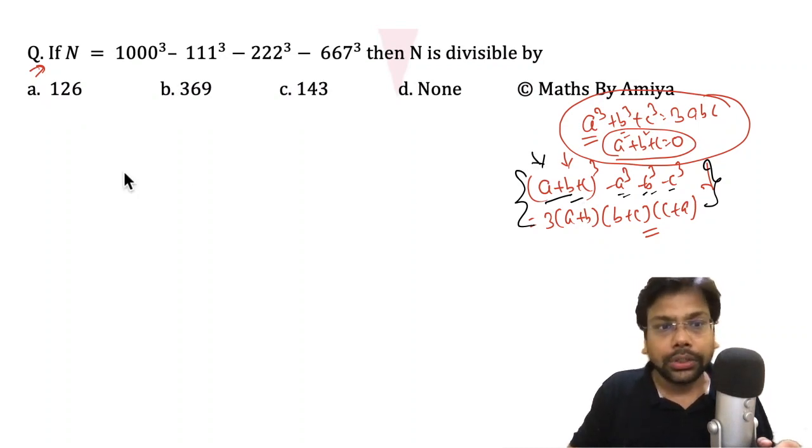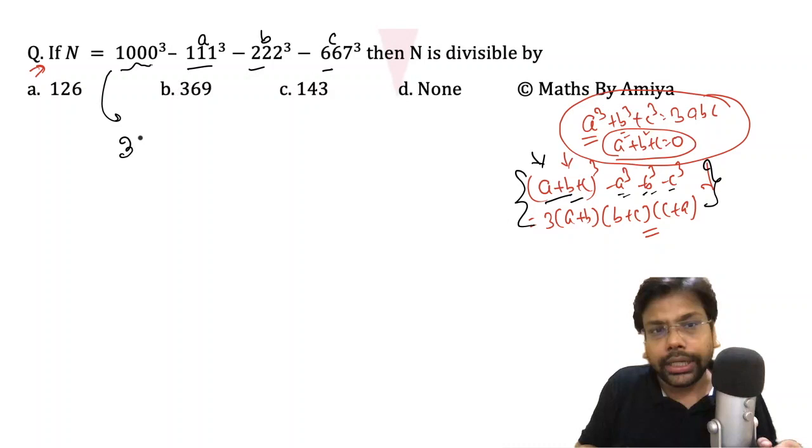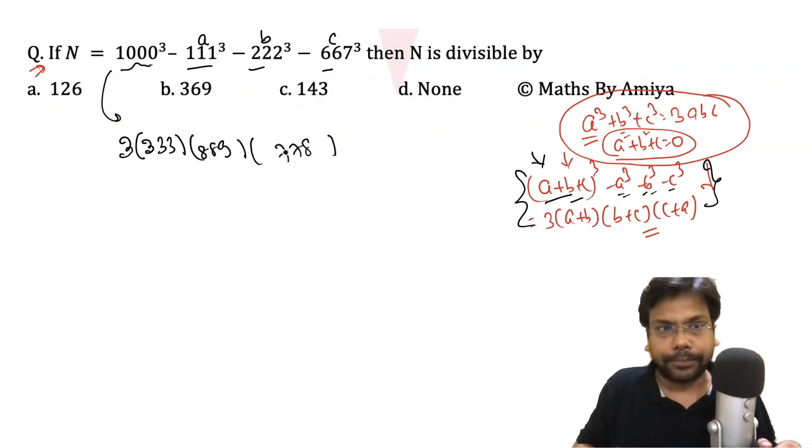So we have the same. Here we have nothing but summation of these three. So A + B + C, if we say this one is A, this one is B, this one is C. So the outcome of this is nothing but 3 × summation of these two is 3, 3, 3. Then we have summation of these two is 8, 8, 9. And the summation of these two is 7, 7, 8. Fine.